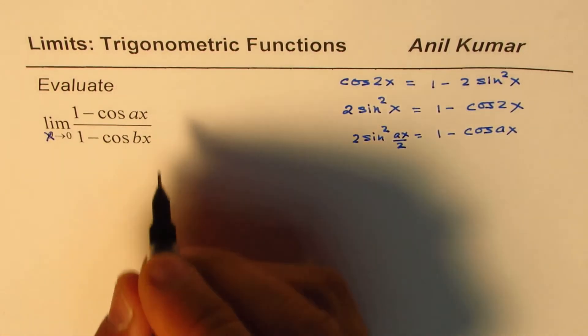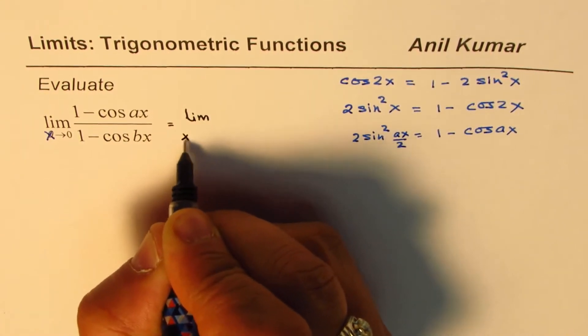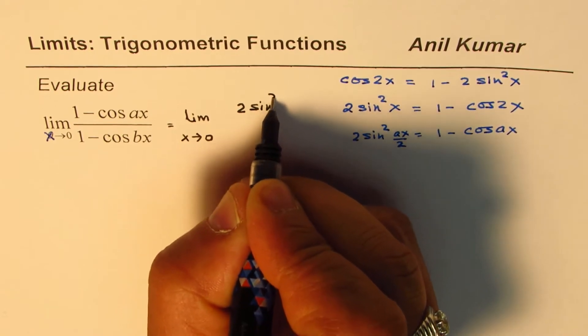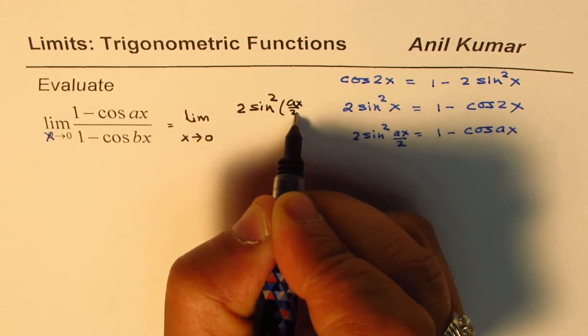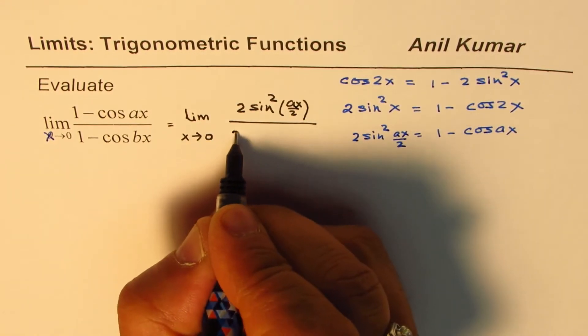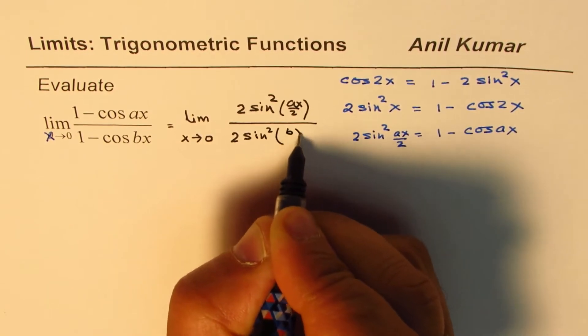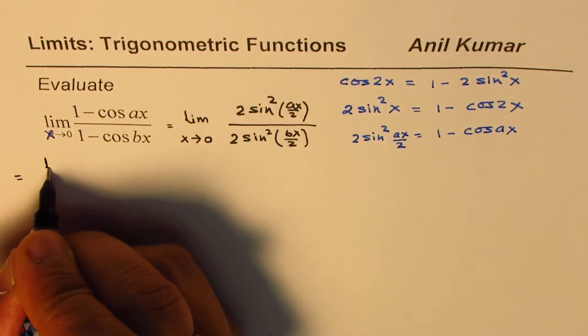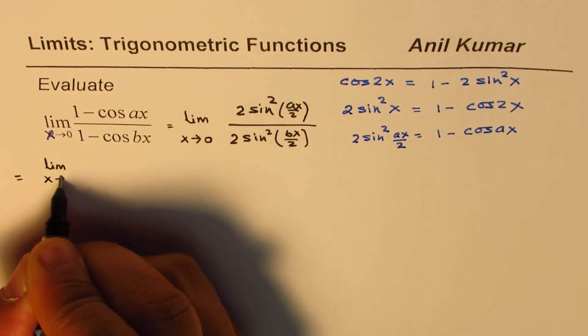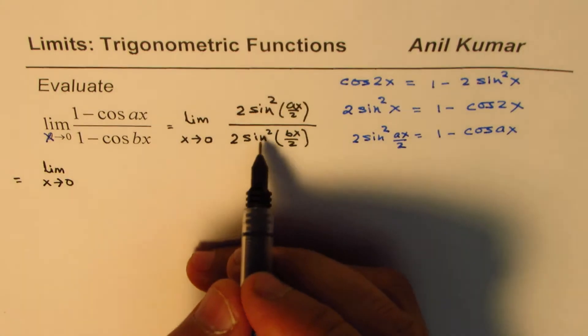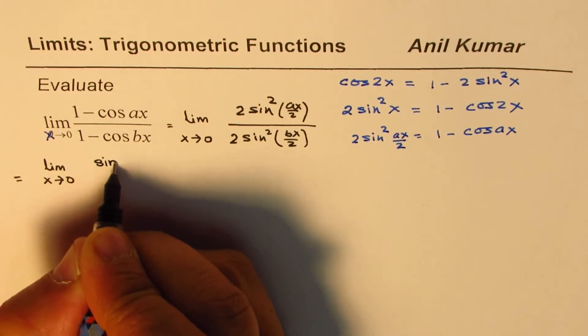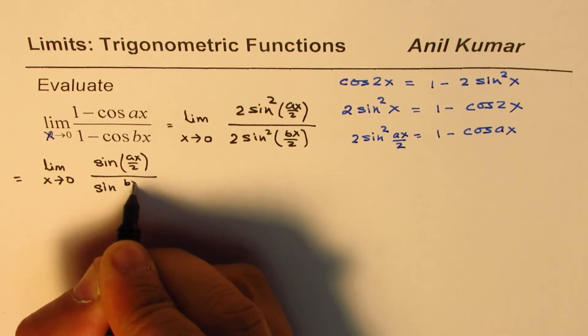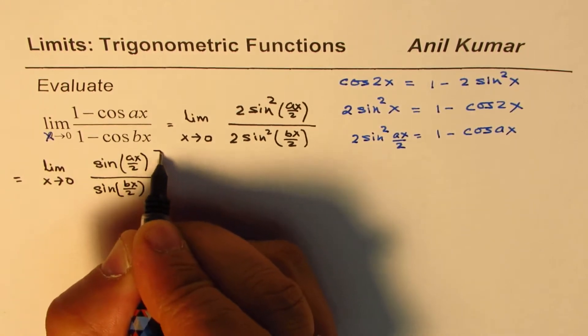With that we could rewrite the given expression as limit x approaches 0: (1 - cos ax) could be written as 2sin²(ax/2) over 2sin²(bx/2). The 2s cancel, so we could write this as limit x approaches 0, and we could actually write square outside, so we could also rewrite this as [sin(ax/2) / sin(bx/2)]², everything squared.